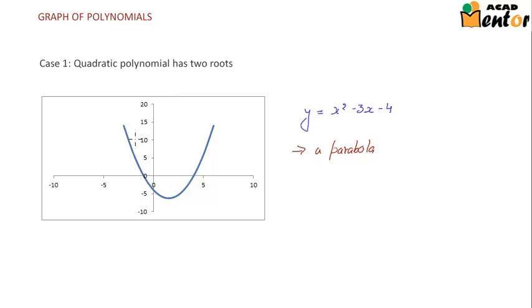Let's first look at a quadratic polynomial having two roots. When a quadratic polynomial has two roots, it will intersect the x-axis at exactly two points, which we also saw in the last video.